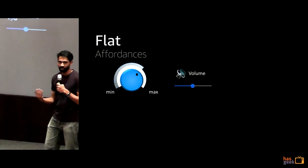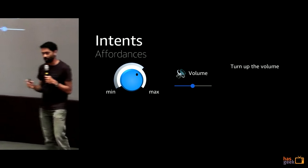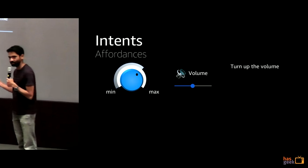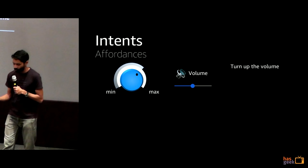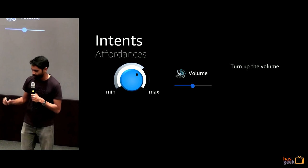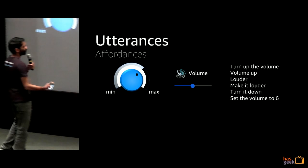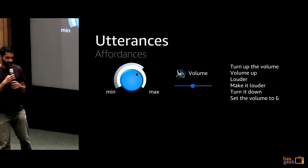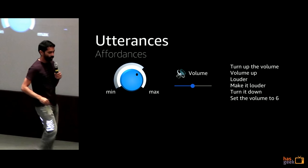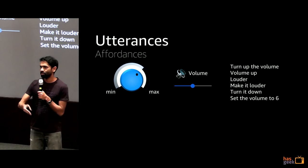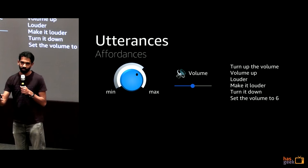In voice there's no screen, so you say something like 'turn up the volume.' The intention — what we call an intent — behind what the user said is the affordance in voice. When you say 'turn up the volume,' that becomes your intent. But the problem is most users will say things differently. People might say 'volume up,' 'louder,' 'make it louder,' 'turn it down,' 'set the volume to 6.' These are different utterances that all need to match to your intent. Having only 'turn up the volume' work would really limit your users — you want them to speak naturally.